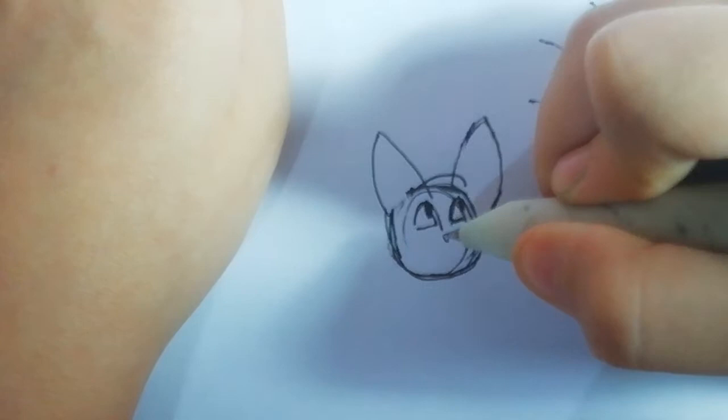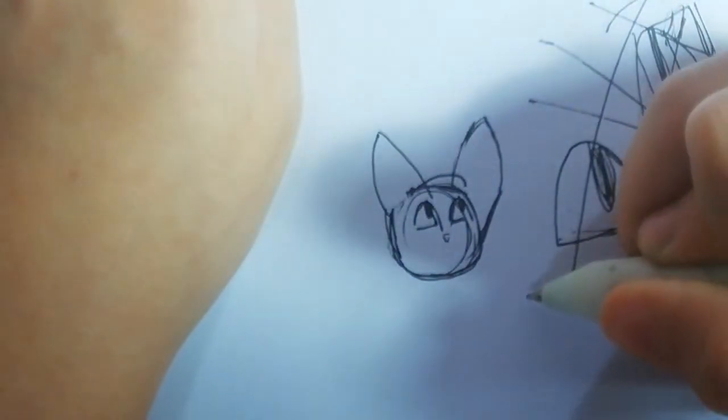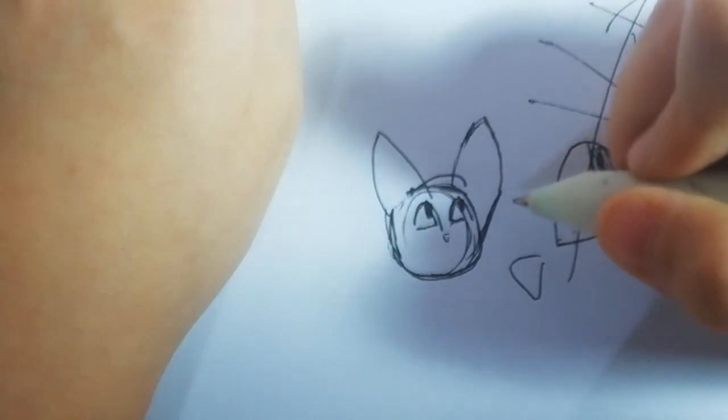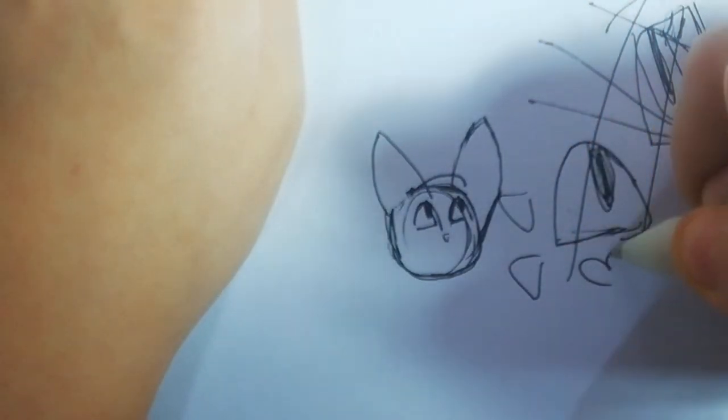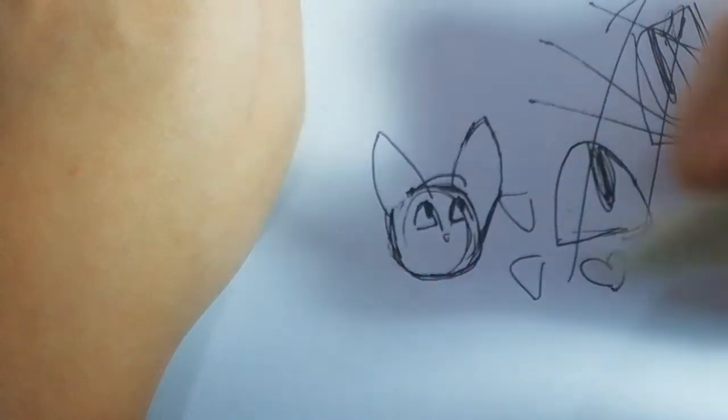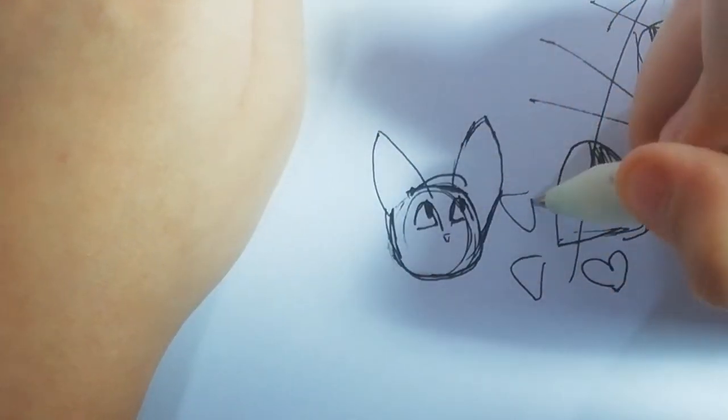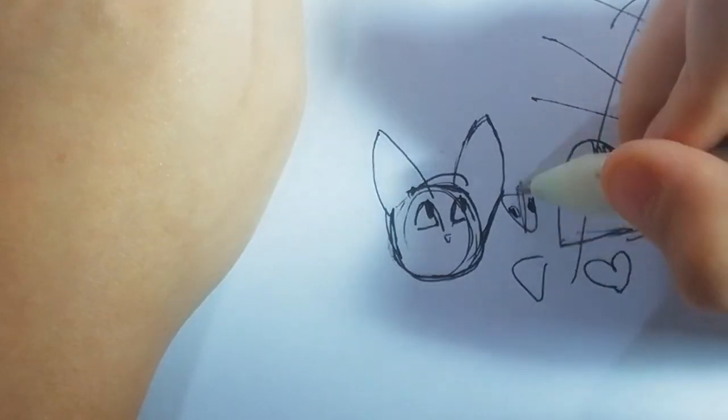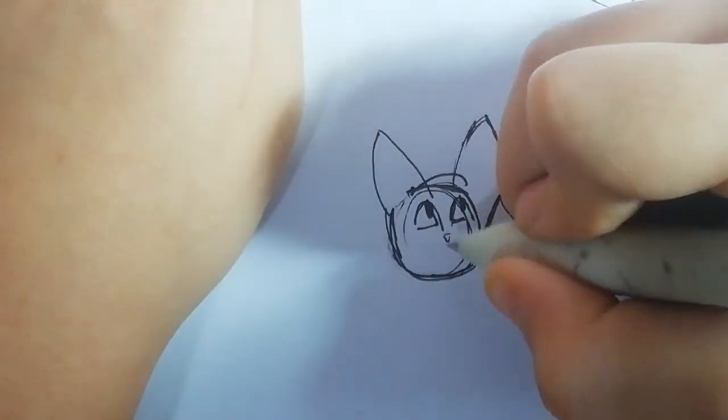You make a little nose, just like this, kind of a Dorito shape, or you can make like a heart shape if you want it to be even more cute. You could even just add little nostrils, but I don't want to do that, but if you want you could.